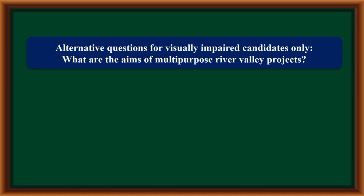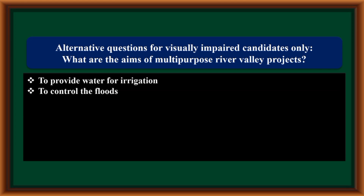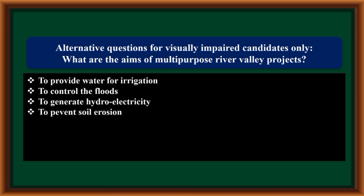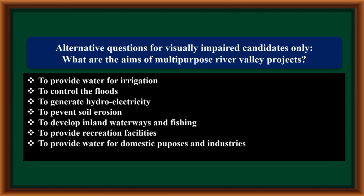Alternative question for visually impaired candidates only. What are the aims of multi-purpose river valley projects? To provide water for irrigation; to control floods; to generate hydroelectricity; to prevent soil erosion; to develop inland waterways and fishing; to provide recreation facilities; to provide water for domestic purposes and industries; to reclaim land for agriculture.